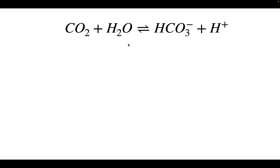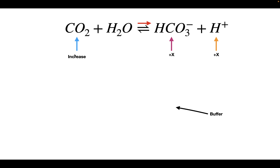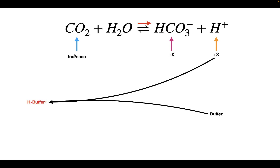Let's say we have our bicarbonate buffer system in solution with a number of other different buffers, and let's say we increase the amount of CO2. When we increase the amount of CO2 in solution, this pushes the reaction forward, forming more bicarbonate and more protons. Now these protons are not going to remain free in solution — they are actually going to be absorbed by other buffers, which will form protonated versions of these buffers.